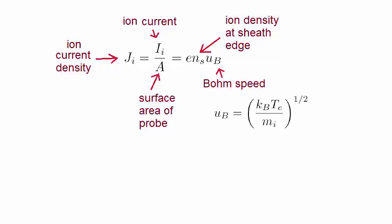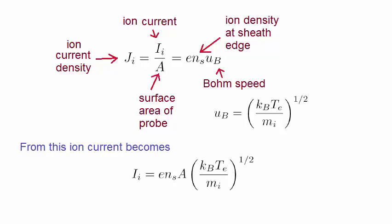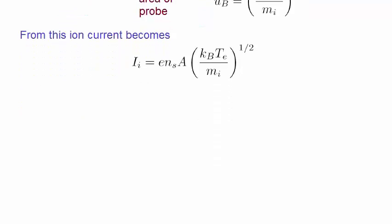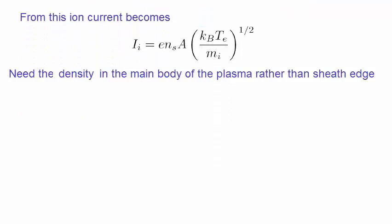Note that we need the density in the main body of the plasma, rather than the sheath edge. This expression for current only includes the density at the sheath edge.